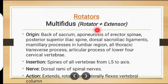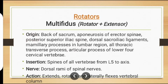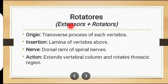Now we discuss about the muscles involved in trunk rotation. The first muscle is multifidus muscle. The muscle in green is multifidus muscle. Origin: back of sacrum, aponeurosis of erector spinae, posterior superior iliac spine, dorsal sacroiliac ligaments, mammillary processes in lumbar region, all thoracic transverse processes, articular processes of lower four cervical vertebrae. Insertion: spines of all vertebrae from L5 to axis. Nerve supply: dorsal ramus of spinal nerve. Action: extension, rotation, and lateral flexion of vertebral column.